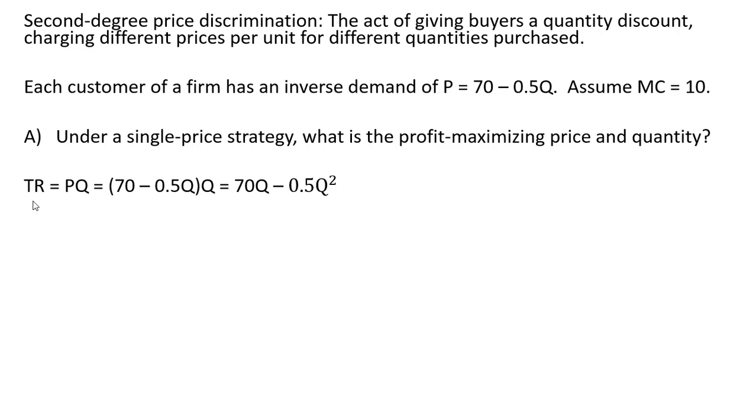First thing we'll do is get the firm's total revenue. Total revenue is price times quantity. For the P part, I'm going to plug in 70 minus 0.5Q. So in parentheses for price, I'm plugging in the inverse demand, and that is all multiplied by Q. Taking this Q and multiplying through by what's in parentheses, we get our total revenue equation.